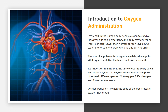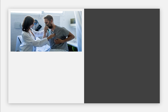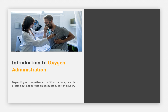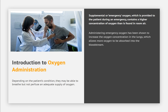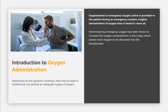It's important to note that the air we breathe every day is not 100% oxygen. In fact, the atmosphere is composed of several different gases: 21% oxygen, 78% nitrogen, and 1% other elements. Oxygen perfusion is when the cells of the body receive oxygen-rich blood. Depending on the patient's condition, they may be able to breathe but not perfuse an adequate supply of oxygen.